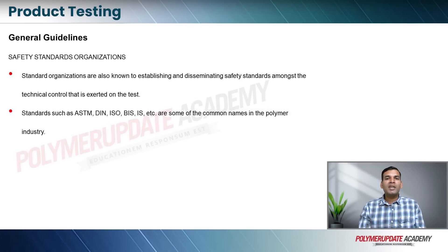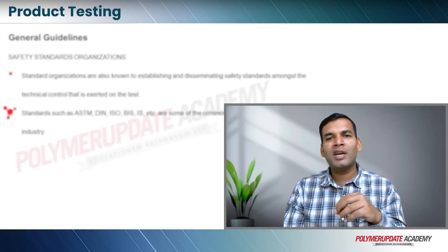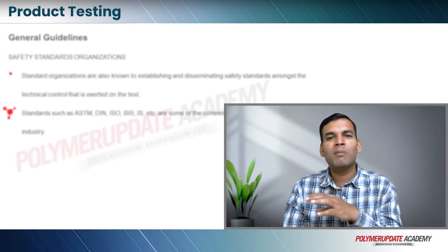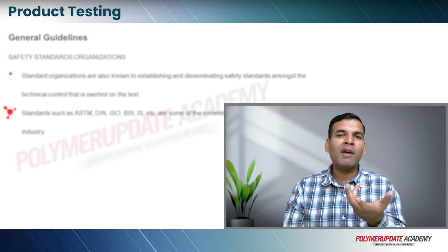Next is safety standards organizations. Standard organizations are known to establish and disseminate safety standards among the technical controls exerted on the test. Standards such as ASTM, DIN, ISO, BIS, and IS are some of the common names in the polymeric industry. Your customer will say as per ISO XYZ you need to meet this measure, and if you are meeting it, no problems — your product will not be called into question for quality.